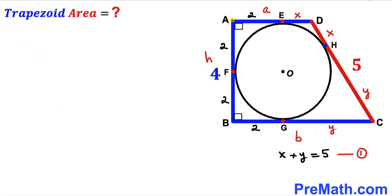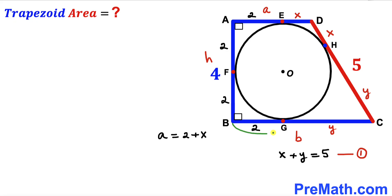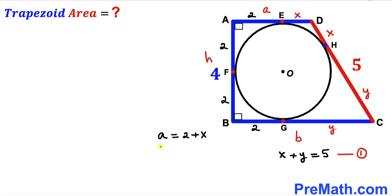Now we can observe that base AD, which is base a, equals AE + ED = 2 + x. So base a = 2 + x. Likewise, base BC, which is base b, equals BG + GC = 2 + y. So base b = 2 + y.